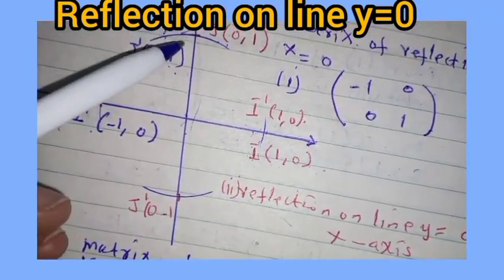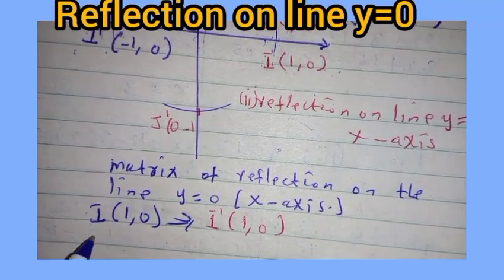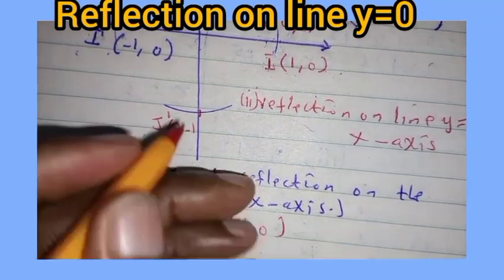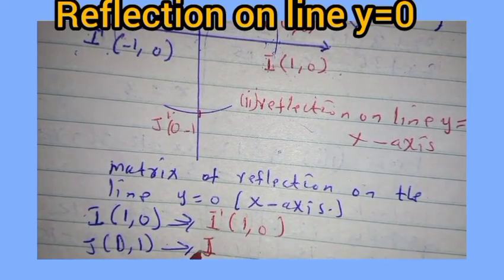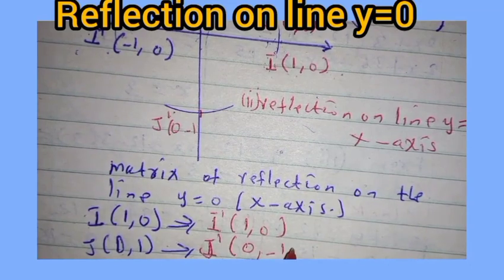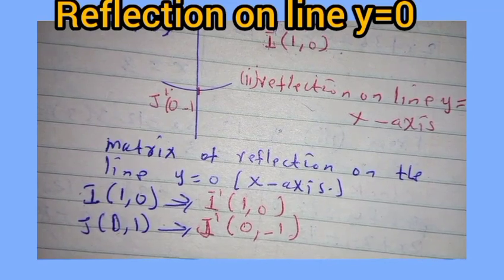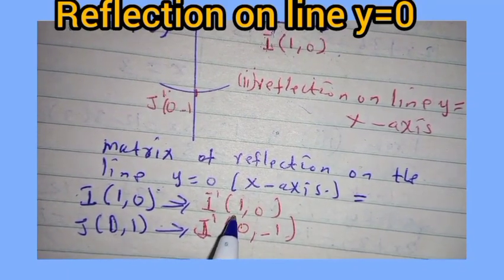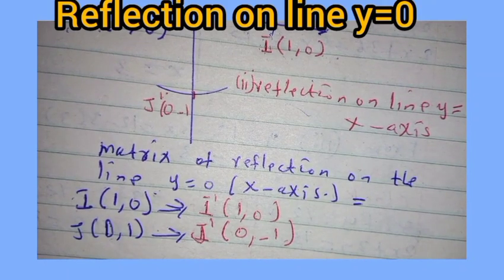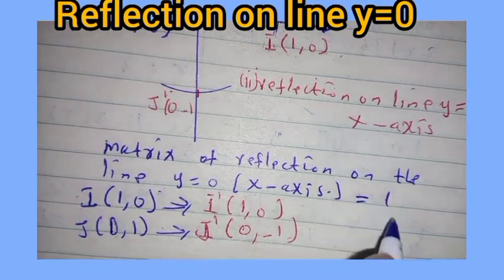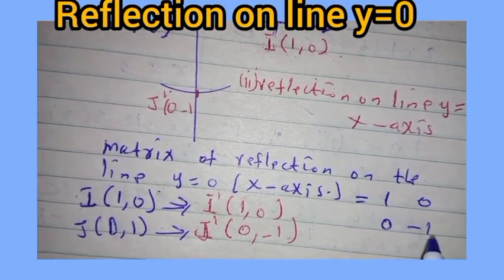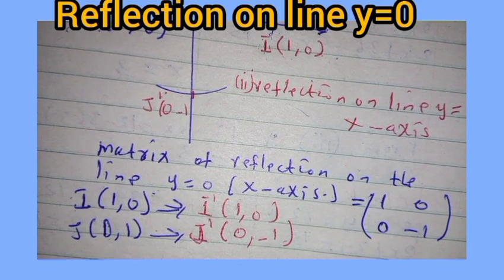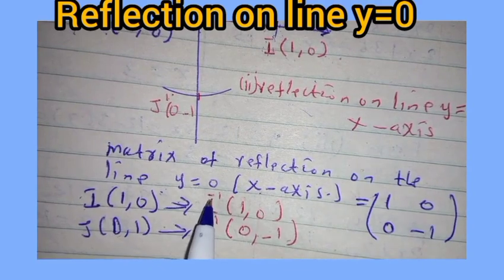Our j is there, so the matrix of j is 0, 1, and we have found the image — j prime, the x-image, is 0, negative 1. Meaning that our matrix of reflection on the line y is equal to 0 — that is the x-axis — will be equal to: we start with the one along the x-axis, it is 1, 0; 0, negative 1. So that is the standard matrix of reflection on the line y is equal to 0.